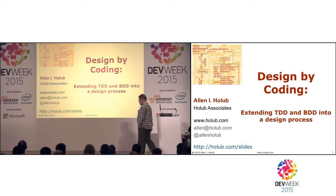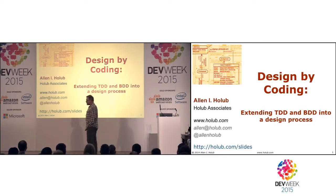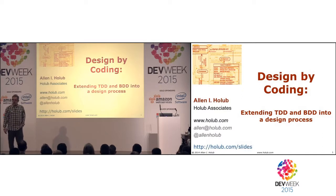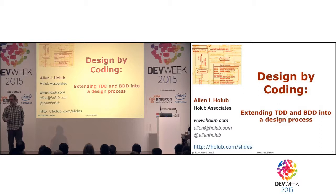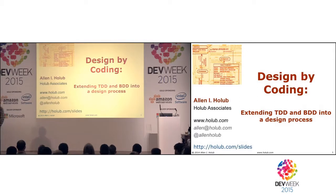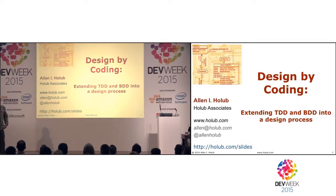The basic problem I'm trying to address is developing code in an agile environment where you are designing incrementally as you're working. What you have in front of you is a story, a unit of work. You want to design in such a way that you can add the capabilities required by the current story while achieving architectural consistency over time as the whole system develops.